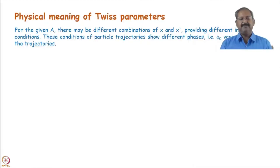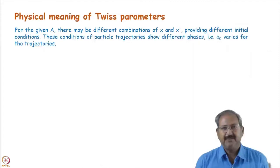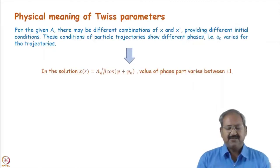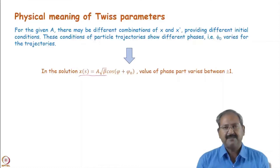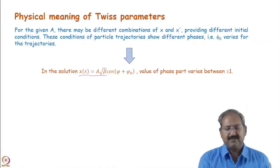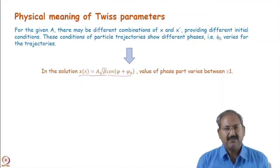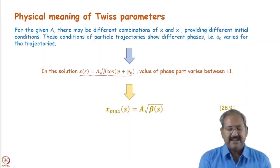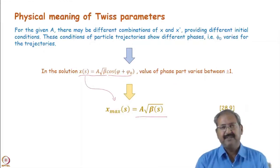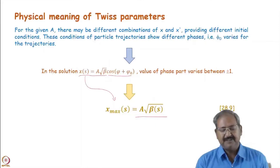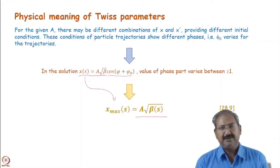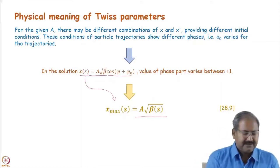Now we consider the physical meaning of the Twiss parameters. The physical meaning of beta is straightforward: from the solution, x equals a times root-beta times cosine-phi. Since the phase part cosine-phi varies between plus and minus one, the maximum value of x is a times root-beta — this is the maximum displacement at a particular location s during betatron oscillation.